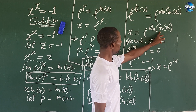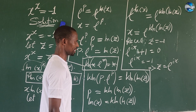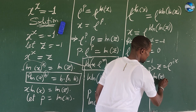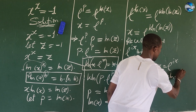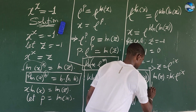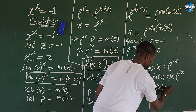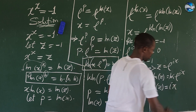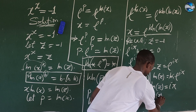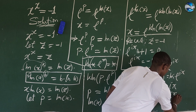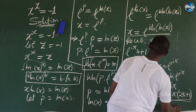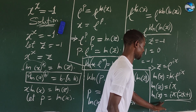From here we have ln of z in our expression, so let's compute it. Taking ln of both sides of z equals e to the power of i·pi gives us ln of z equals ln of e to the power of i·pi, which simplifies to ln of z equals i·pi. For any integer k, the general form is ln of z equals i·pi times (2k plus one).